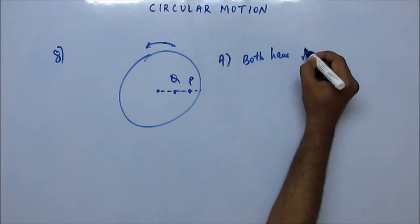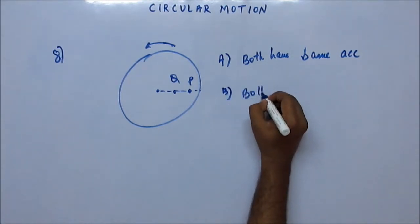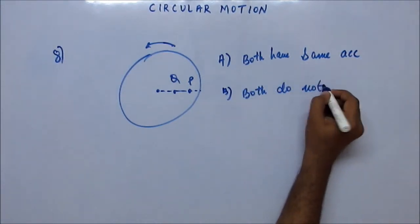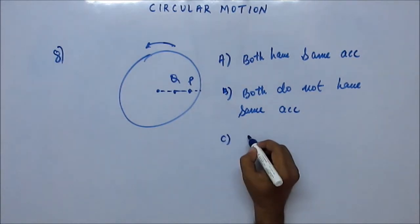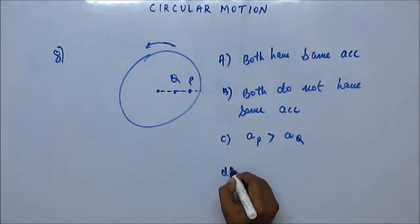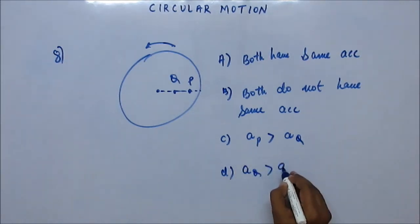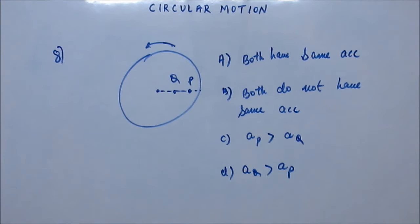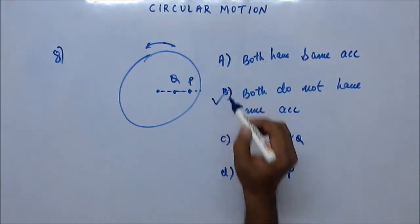Option A: both have the same acceleration. Option B: both do not have the same acceleration. Option C: acceleration of P is greater than acceleration of Q. Option D: acceleration of Q is greater than acceleration of P. The answer is C — acceleration of P is greater than Q.